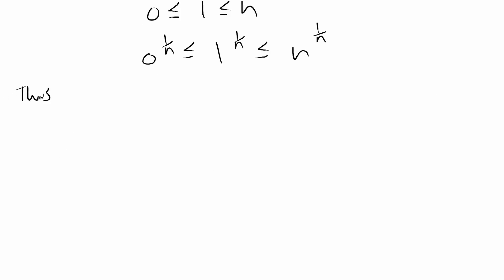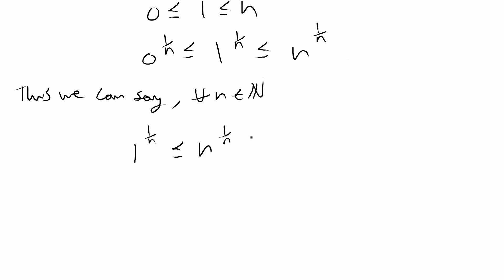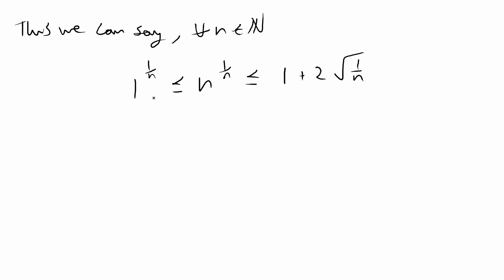From this we can pull out the left-hand side. Thus we can say, for any n in the naturals, 1 to the 1 over n is less than or equal to n to the 1 over n, which is less than or equal to 1 plus 2 times the square root of 1 over n. Now we have the inequality sandwiched between two values, and we just apply the squeeze theorem — checking that the limit of the left-hand side equals the limit of the right-hand side, then concluding the middle must equal that value too.